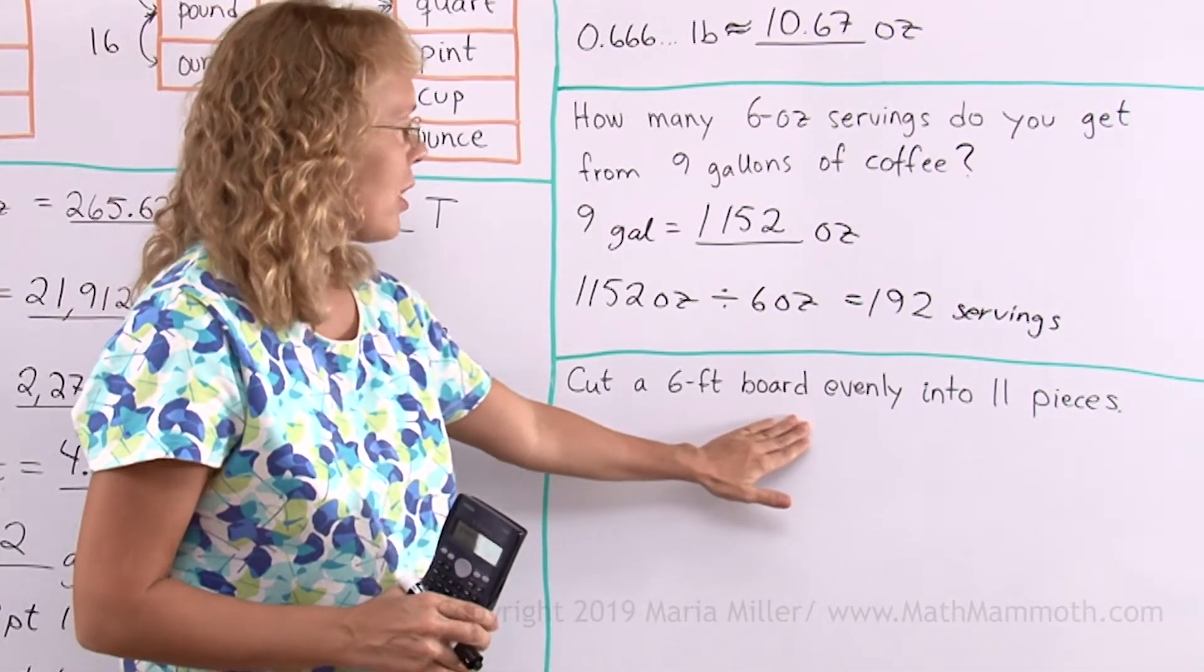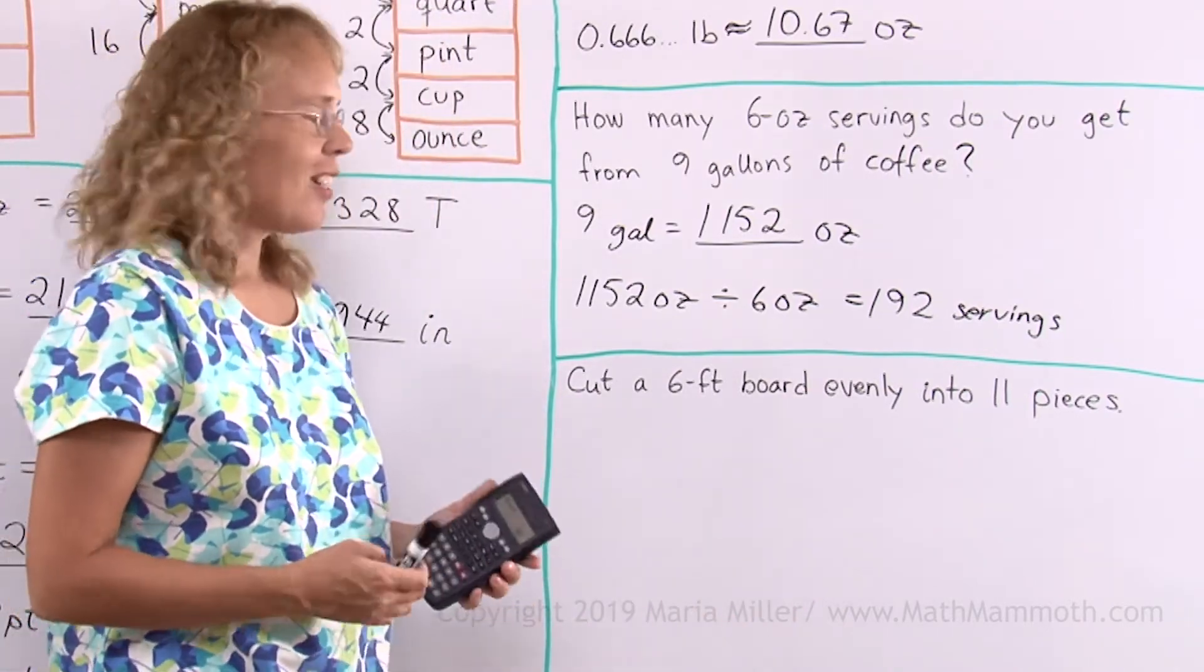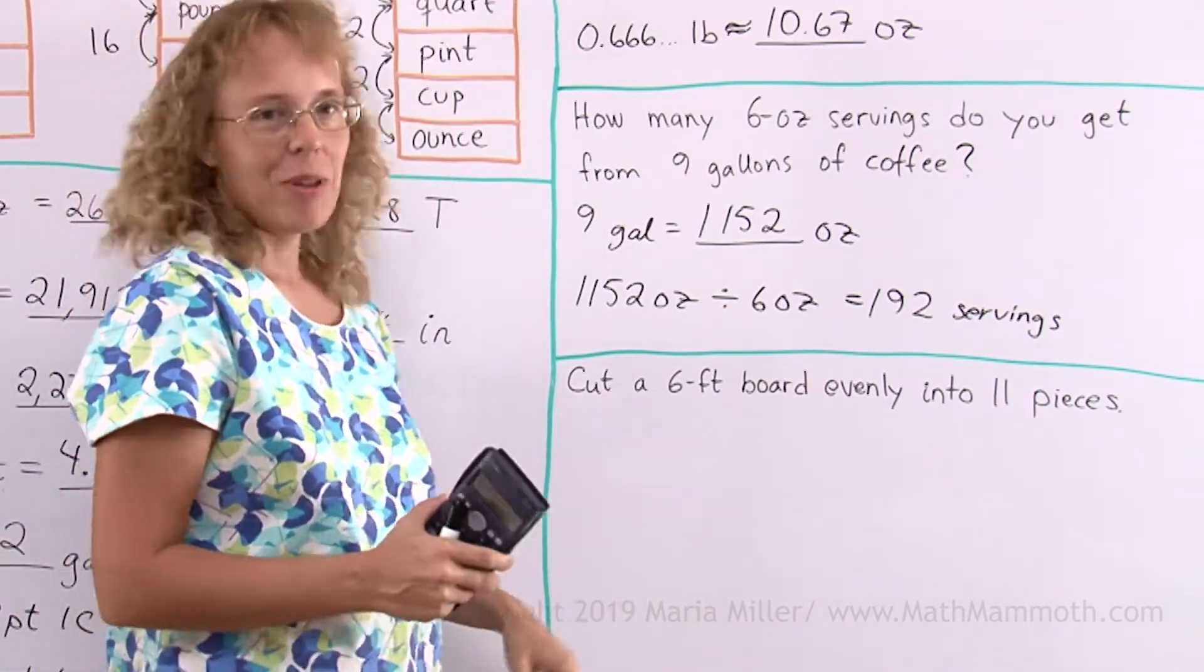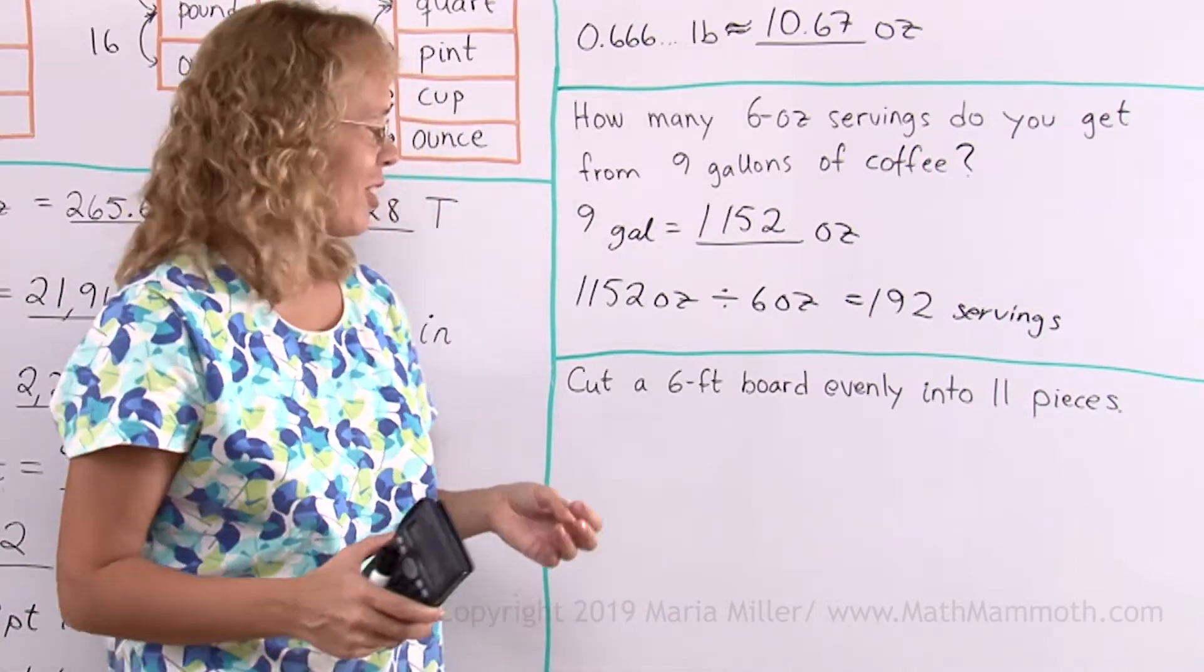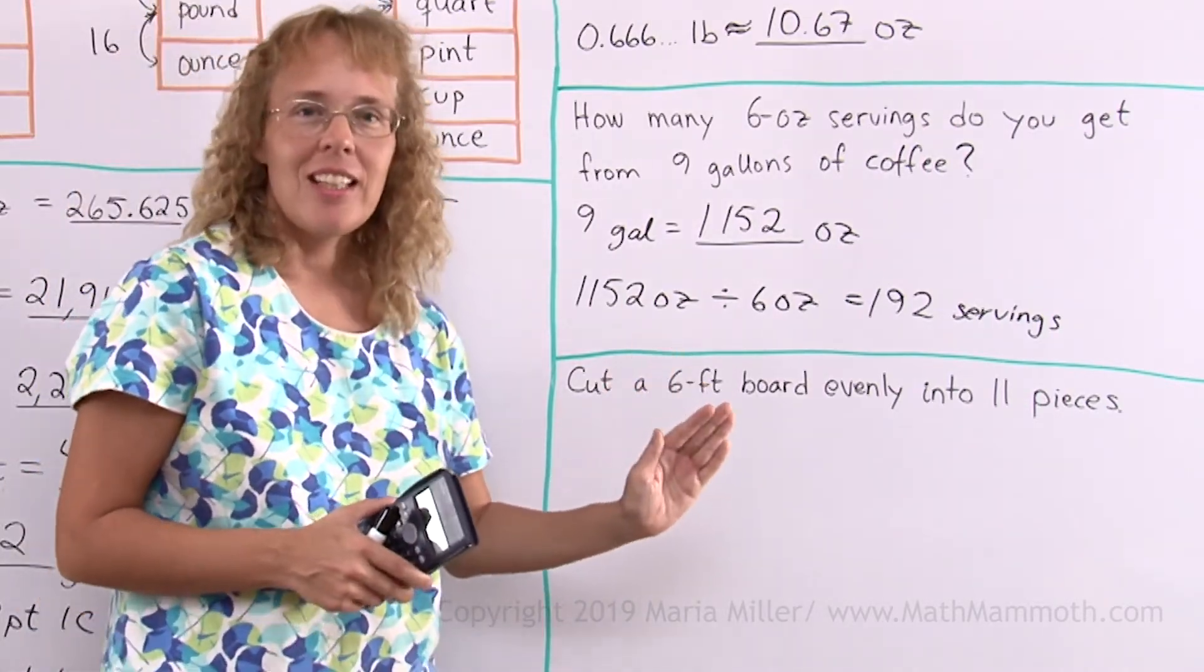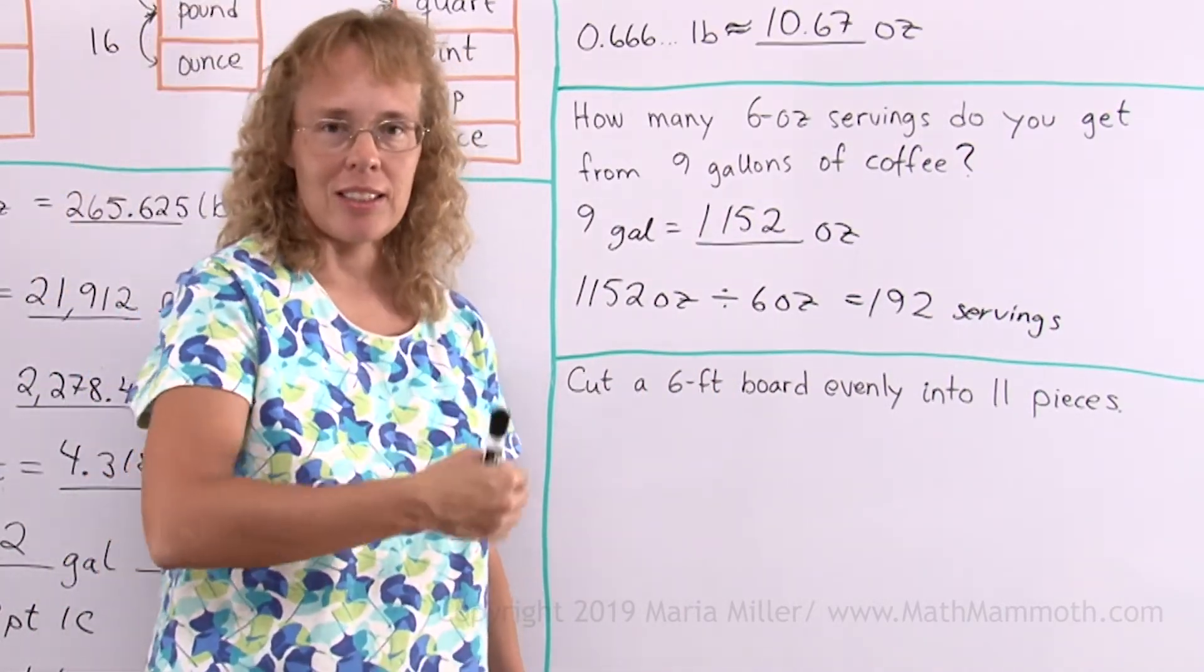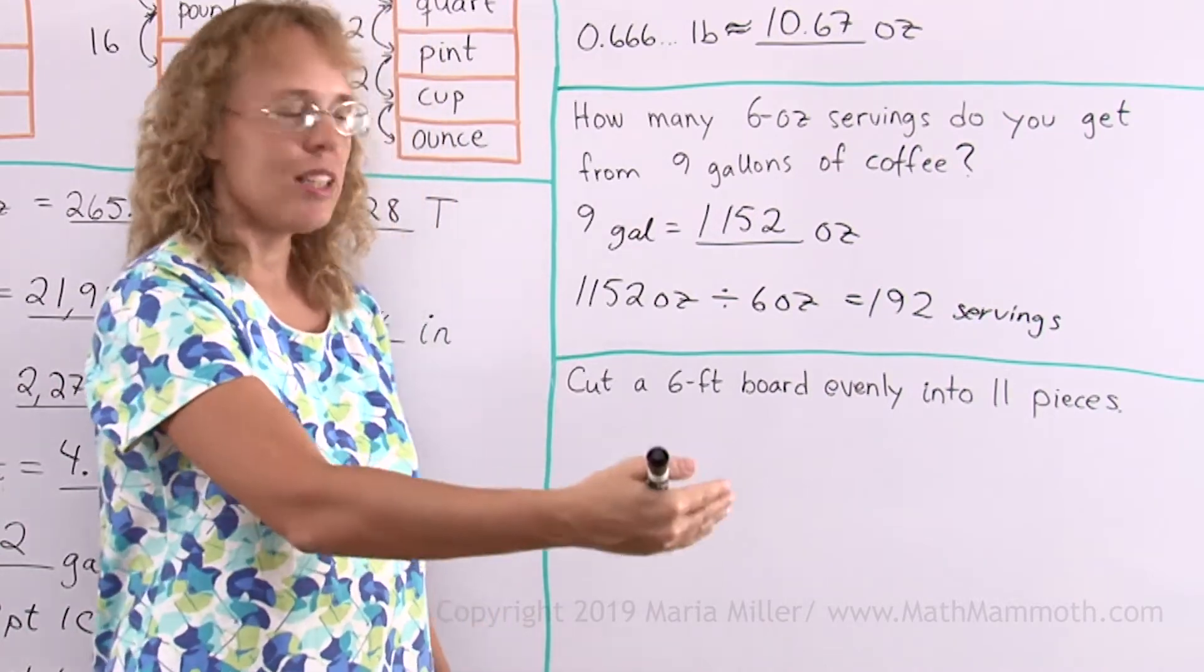Cut a six foot board evenly into 11 pieces. Now, if you are a carpenter, you probably usually cut it into 12 pieces or six pieces or some other easier number. But if you want to cut it evenly into 11 pieces, then what happens?